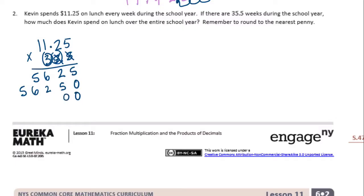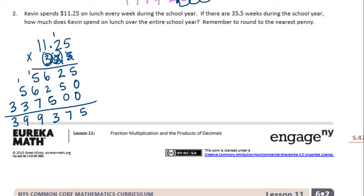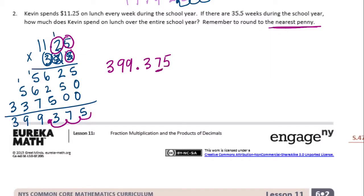On to the three with two placeholders. Three times five is fifteen, carry the one. Three times two is six, plus one is seven. Three times one is three. Three times one is three. Add together: six plus two is eight, plus five is thirteen, carry the one. One plus five is six, plus six is twelve, plus seven is nineteen, carry the one. One plus five is six, plus three is nine. And three. There were three digits behind the decimal point, so move it over three places: three hundred ninety-nine and three hundred seventy-five thousandths. But we round to the nearest penny — the hundredths place — and since there's a five next to it, seven rounds up to eight. So we get three hundred ninety-nine dollars and thirty-eight cents.